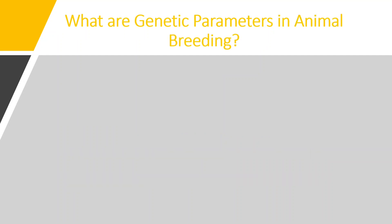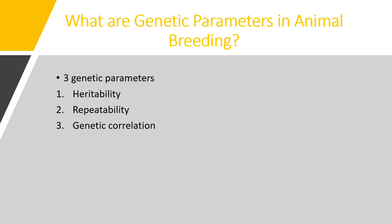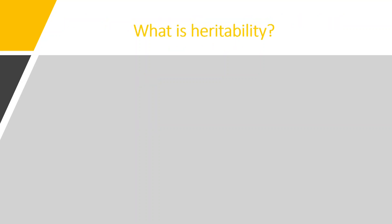After defining the genetic parameter, our next question is: what are the genetic parameters used in animal breeding? There are mainly three genetic parameters we use in animal breeding. The first one is heritability, the second one is repeatability, and the third one is genetic correlation. Now I will define these three genetic parameters in detail.